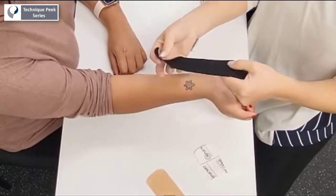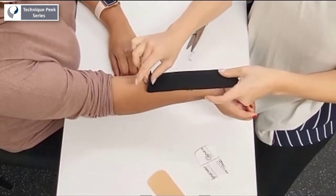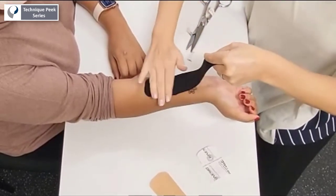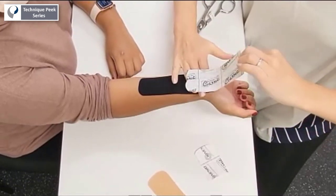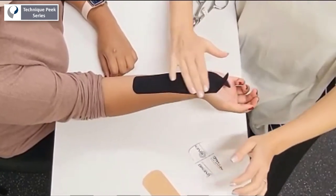First, peel the proximal end of the tape and apply to the skin with no tension. Rub vigorously to activate the adhesive in the tape. With paper off tension, apply the remainder of the tape up to the tails.